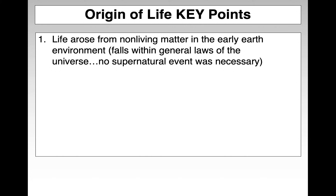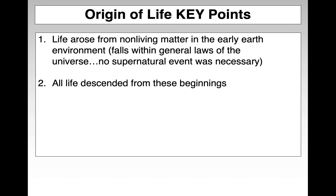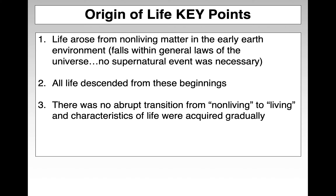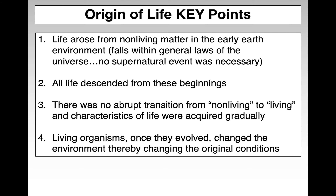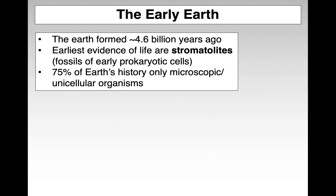So the origin of life — here are the key points. Life arose from non-living matter in the very early earth environment. It generally fell within general laws of the universe; no supernatural event was necessary. All life descended from these early beginnings, and there was no abrupt transition from non-living to living. Rather, things were acquired very gradually. And living organisms, once they evolved, changed the environment in which they were living, thereby changing the original conditions.